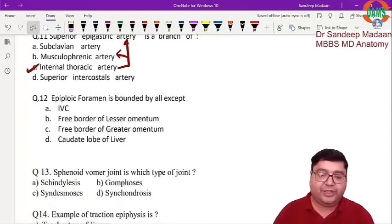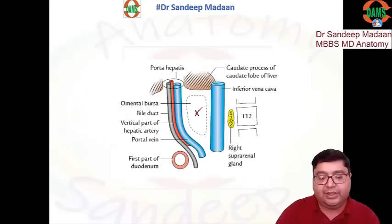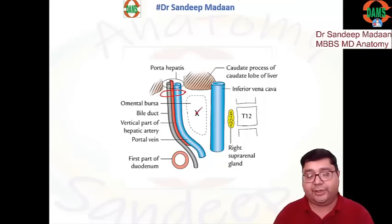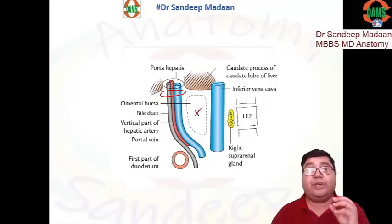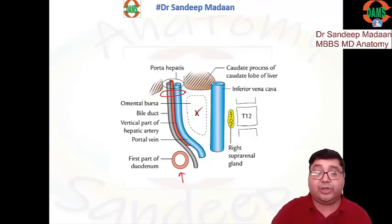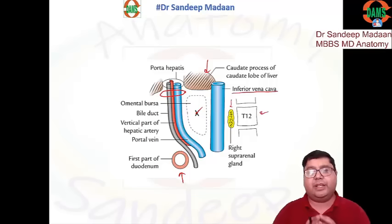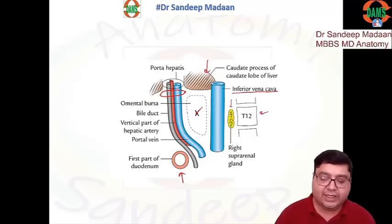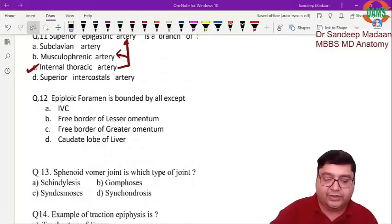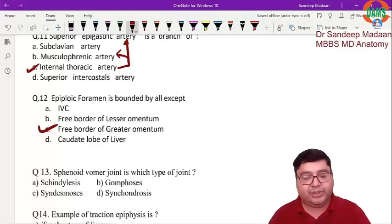Next question: the epiploic foramen is bounded by all except. Looking at the diagram, anteriorly lies the right free margin of the lesser omentum (not the greater omentum), which contains the portal triad structures. Below is the first part of the duodenum, above is the caudate lobe of the liver, and behind is the IVC, right suprarenal gland, and T12 vertebra. The answer here is the free edge of the greater omentum.